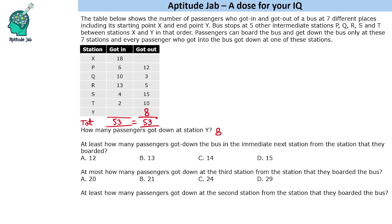The next three questions are based on maximization and minimization. This question asks: at least how many passengers got down at the immediate next station from the station they boarded? To solve this, we will extend the table.